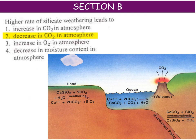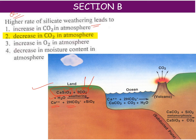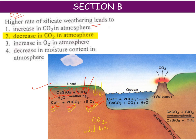The next question asks what a higher rate of silicate weathering leads to. Considering the direct reaction: a silicate rock absorbs atmospheric CO2, and in the presence of water it dissociates into calcium ions, bicarbonate, and SiO2. This reaction consumes atmospheric CO2. Therefore, a higher rate of silicate weathering leads to a decrease in CO2 in the atmosphere.